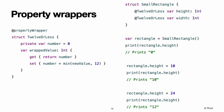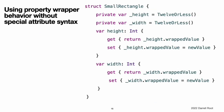Here is a structure that stores a rectangle that uses the TwelveOrLess property wrapper to ensure its dimensions are always 12 or less. The height and width properties get their initial values from the definition of TwelveOrLess, which sets TwelveOrLess.number to zero. The setter in TwelveOrLess treats 10 as a valid value, so storing the number 10 in rectangle.height proceeds as written. However, 24 is larger than TwelveOrLess allows, so trying to store 24 ends up setting rectangle.height to 12 instead — the largest allowed value.